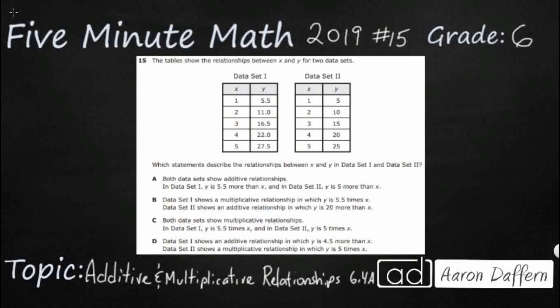So we have two tables here, and each table shows the relationship between x and y. So these are input-output tables, and we've seen these for several years now — even starting all the way back in 2nd and 3rd grade. But now what we need to do is describe — which means we need to use words, and that's why all of your answer selections are in words rather than just pure numbers — the relationship between x and y in each of these two data sets.